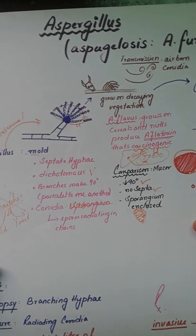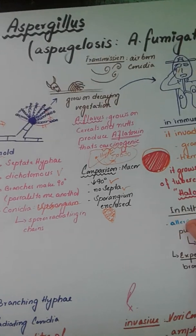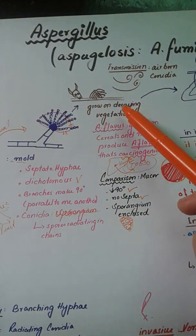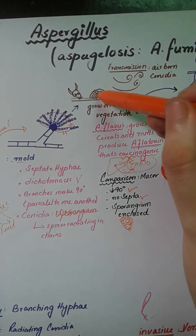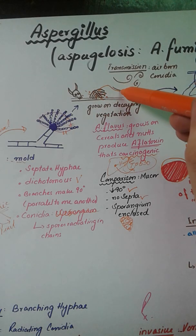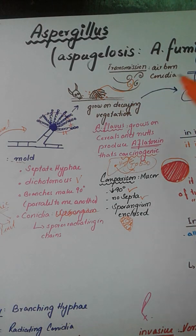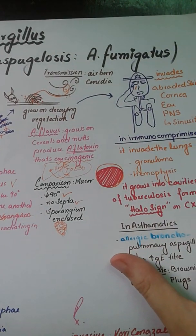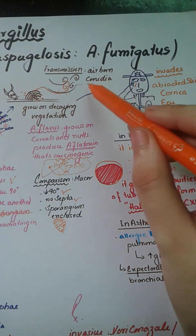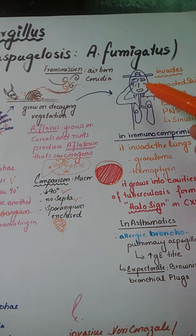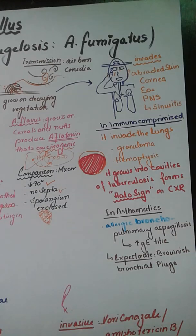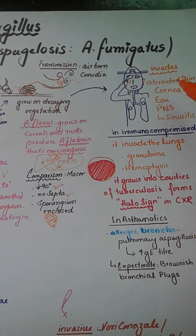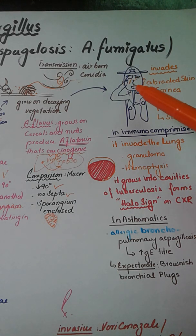Returning to Aspergillus fumigatus — it grows on decaying material, and the conidia or spores can become airborne and be carried by the wind. If inhaled or contacted, it can affect the eyes causing corneal infection, the nose, and the ears. It can also invade the skin through abrasions, as well as the corneum, ear canal, and paranasal sinuses, resulting in sinusitis.